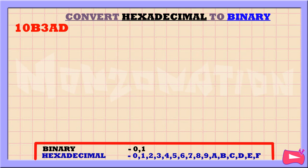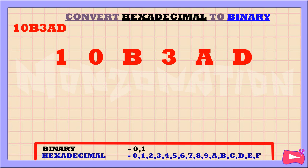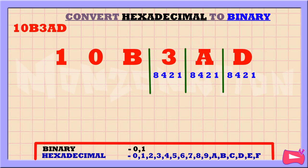Let's convert the hexadecimal number 10B3AD to binary. The first step is to separate each hexadecimal digit. Then let's write down 8, 4, 2, and 1 below for each hexadecimal number. Let's start from the right.